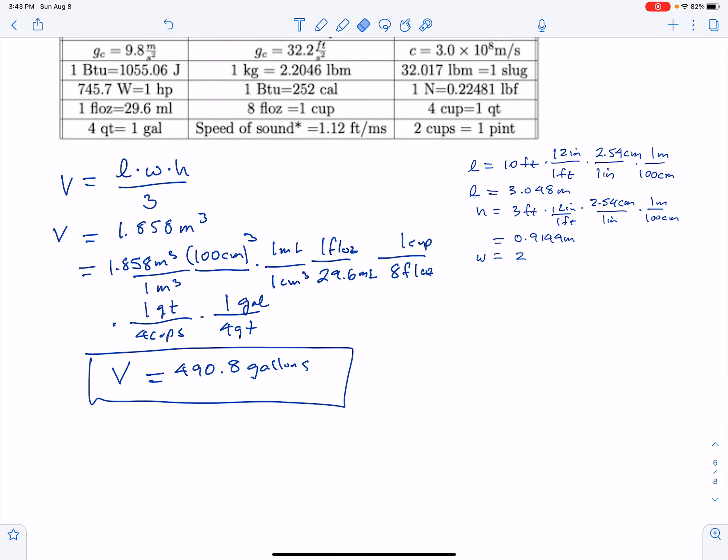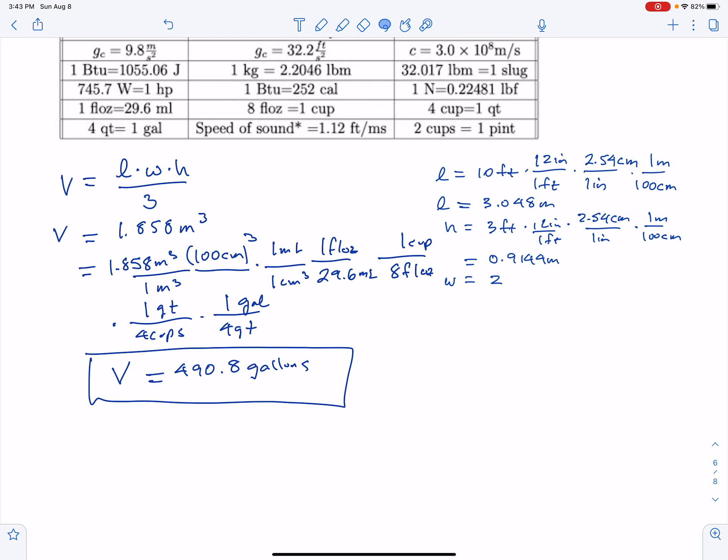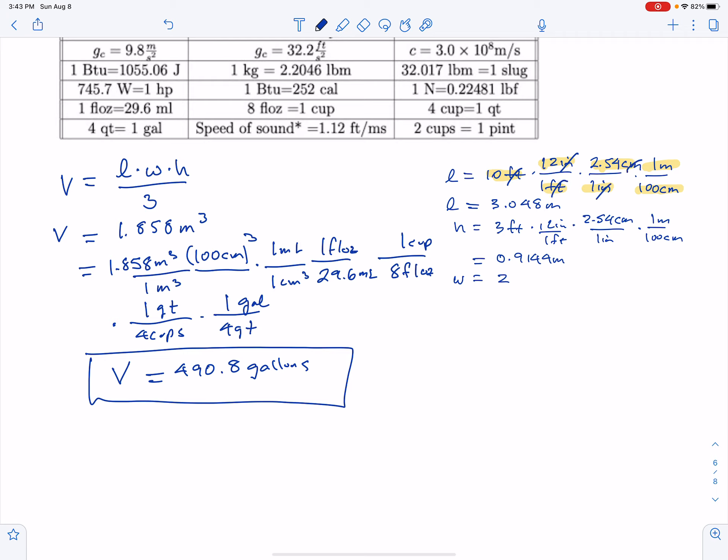I took the length measurements - anything that wasn't in metric I converted it to metric using conversion factors: 10 feet, 12 inches in a foot, 2.54 centimeters in an inch, one meter in 100 centimeters. That does that conversion and you get this converted over into meters. Do the same thing for height, and width is already given in meters.